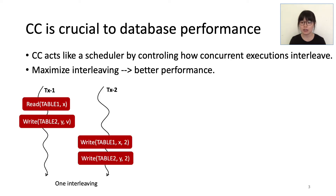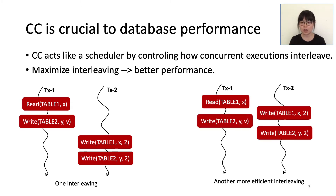This is an example interleaving of two transactions by some concurrency control algorithm. Here's another interleaving of the same two transactions by a different algorithm. The second interleaving is more efficient because it allows for more parallel execution and inserts less waiting.